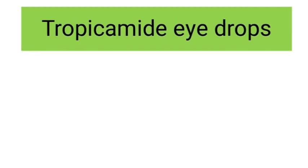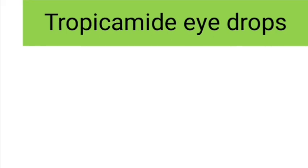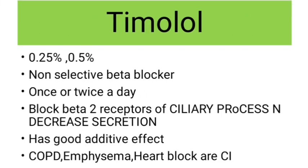Tropicamide eye drops — it is not used as a cycloplegic drug; it is used only for mydriatic purposes. It comes in 0.5% and 1%, usually along with phenylephrine drops. The next group of drugs are the anti-glaucoma medications, which are the favorite drugs asked in your viva. The first one is timolol maleate. It comes in 0.25% or 0.5% drops. It is a non-selective beta blocker, so it has action on both the cardiovascular as well as the respiratory system. It is used either once or twice daily. The action is it blocks the beta receptors present in the ciliary process, thereby decreasing the secretion of aqueous humor. It has good additive effect when used with other drugs.